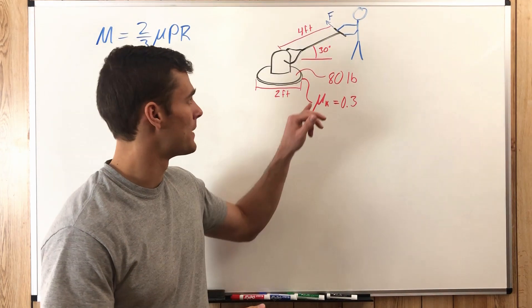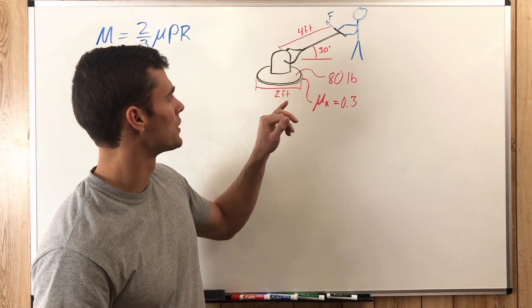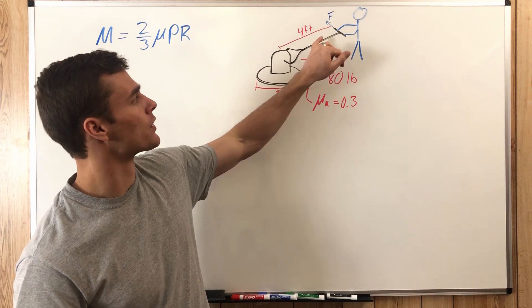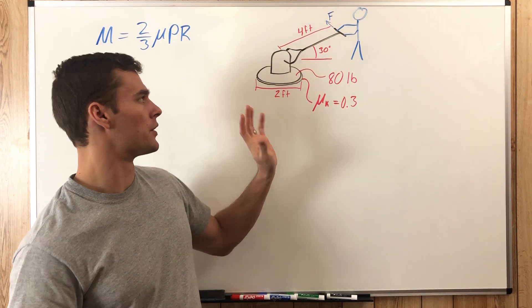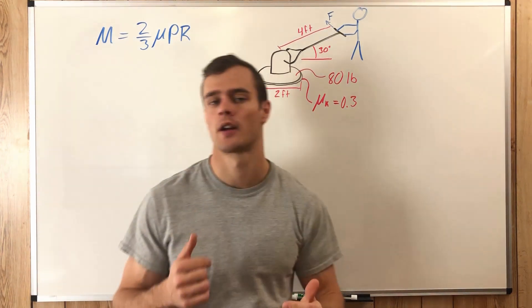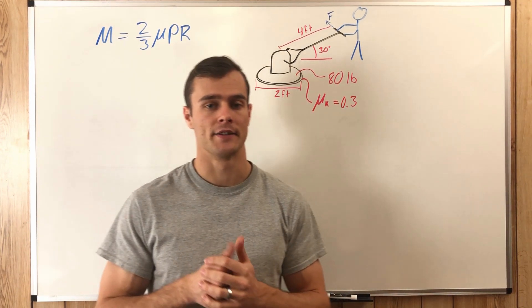So what we have here is a man with a floor polisher and what we need to do is find the force F needed to keep this polisher from just rotating due to the torque of the motor.